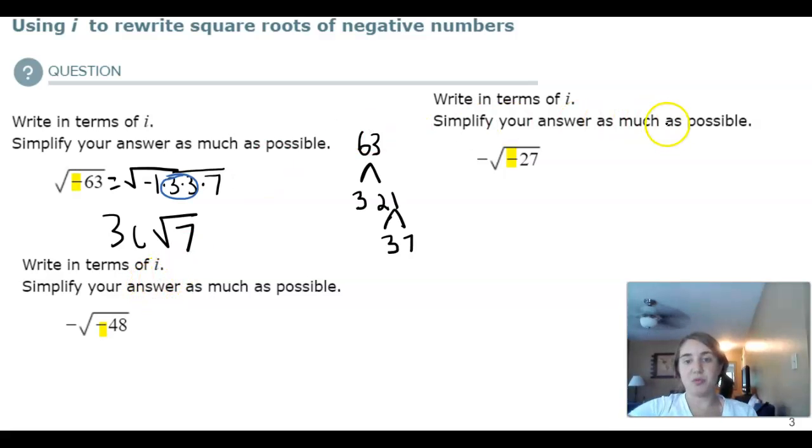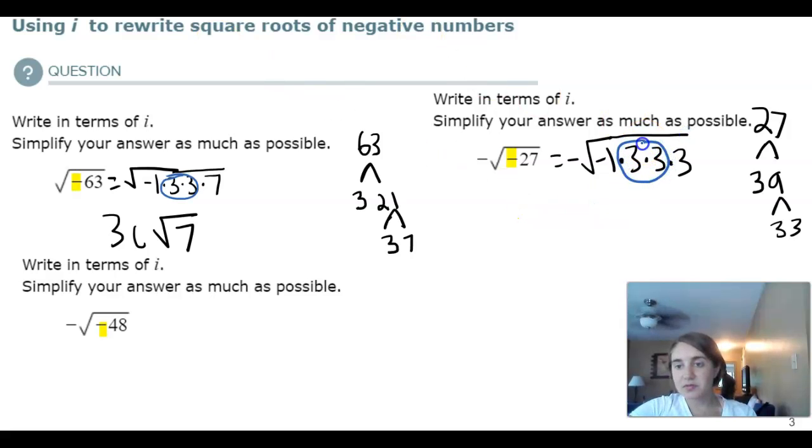So you guys can go ahead and try the other ones on your own, but we'll walk through them. 27 is 3 times 9, 3 and 3 equals negative 1 times 3 times 3 times 3. So we have negative 1 times i times the 3 square root 3. Negative 3i square root 3.